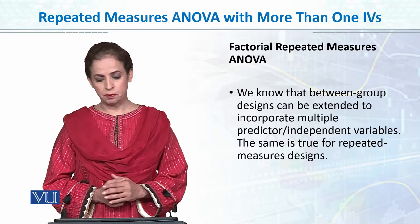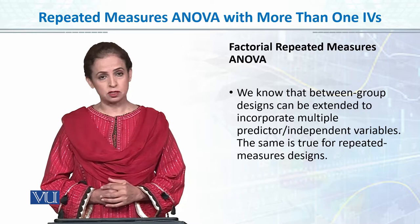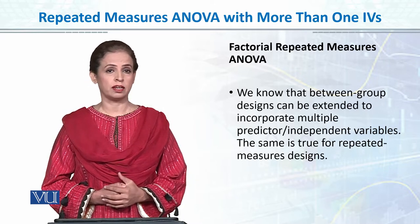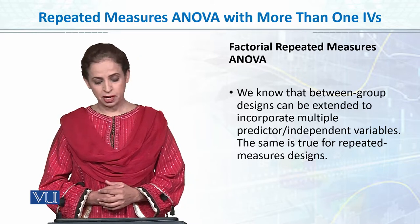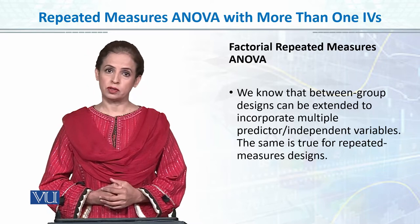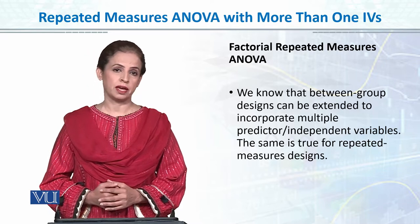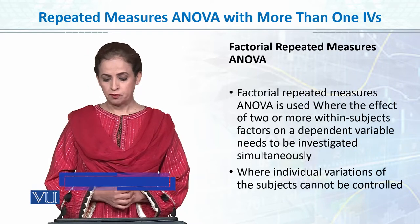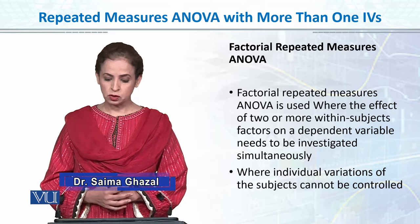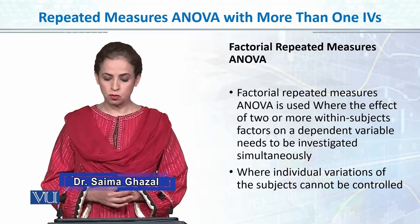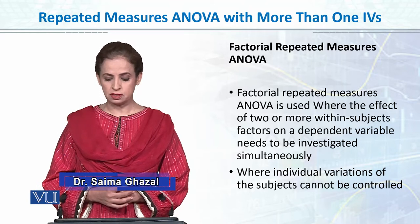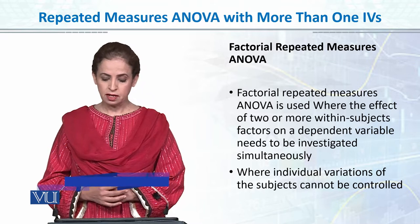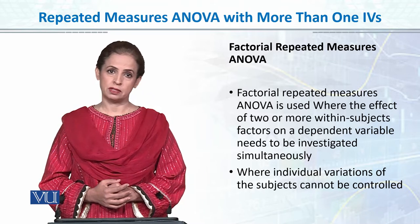We know that between-group design can be extended to incorporate multiple predictors — more than one independent variable. The same can be done for repeated measures samples as well. Factorial repeated measures ANOVA is used where the effect of two or more within-subject factors on the dependent variable needs to be investigated simultaneously.